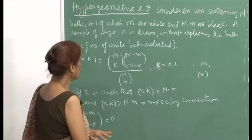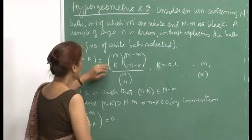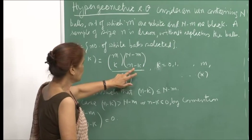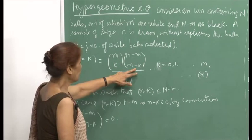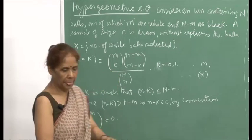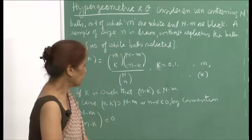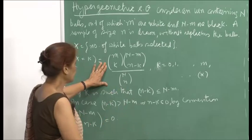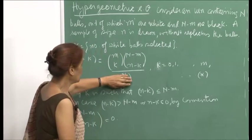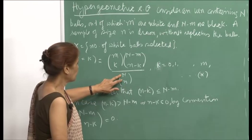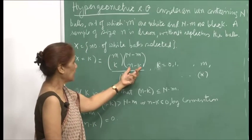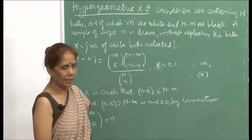k can obviously vary from 0 to m, because there are m white balls. The probability would be: out of m white balls you want to select k, and out of the remaining N minus m balls you are selecting n minus k black balls, so your total sample size is n balls. The total number of ways of selecting n balls from N balls is N choose n. This gives m choose k times (N minus m) choose (n minus k), divided by N choose n.